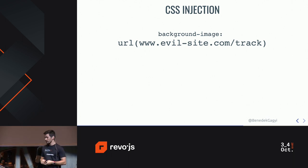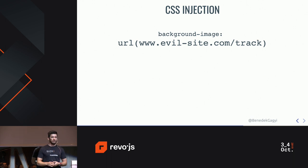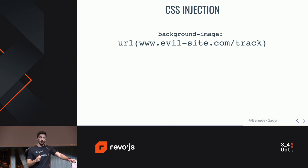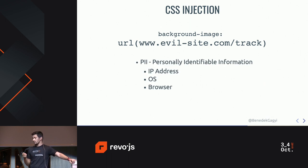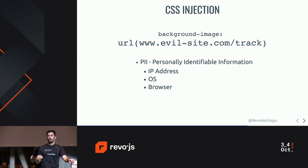You can turn the background color to something ugly, but you can do something even more interesting. You can just set the background image to a URL that you control. Your server will get a request from that user, and with that request, some extra information is coming. All of your requests contain PII — personally identifiable information — like IP address, the OS you're using, the browser. These things are valuable. It doesn't mean I can execute code on your computer — not yet. But I get information about your users and I can use that later to construct a more complicated and more malicious attack.